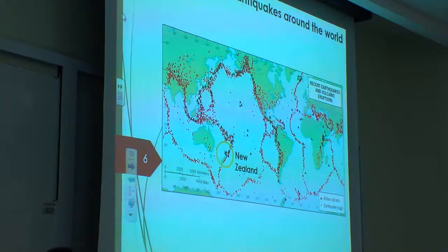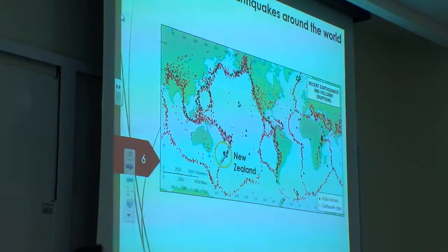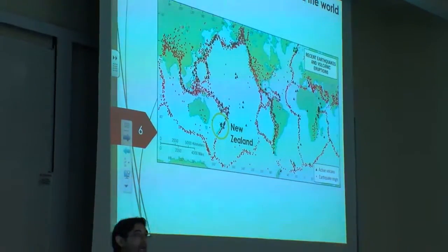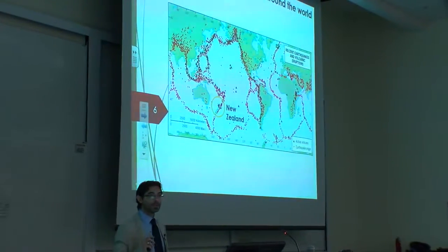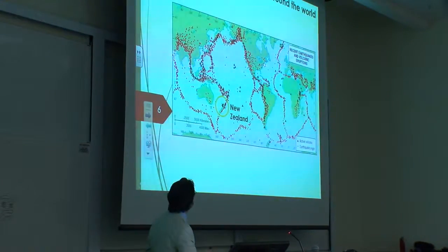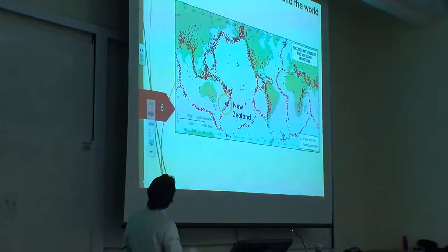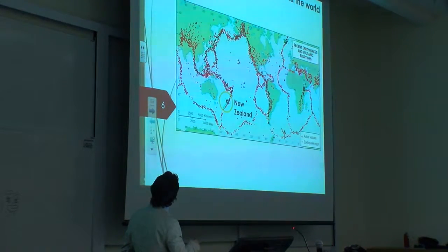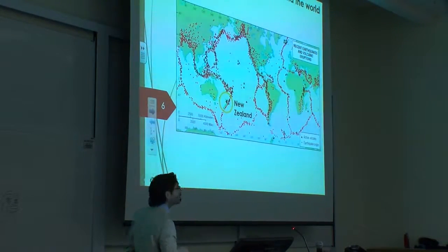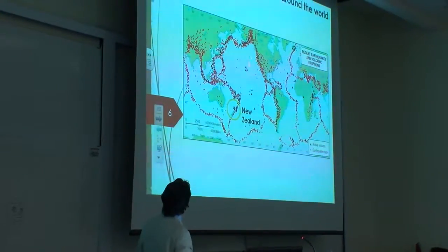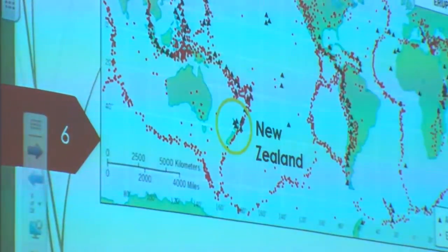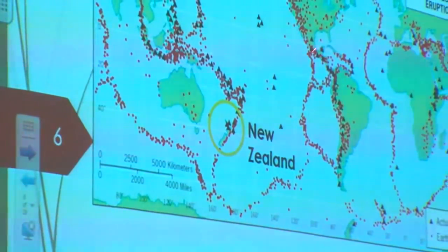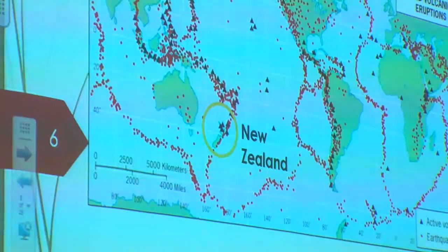Today I want to focus on earthquake engineering and the damage caused by earthquakes. Let's have a look at a typical map showing the location of very big, severe earthquakes around the world. You can clearly see some areas affected by many earthquakes — every red point is an earthquake. You can also see black triangles, which mark the location of volcanoes. Wherever you have earthquakes, you also have volcanoes, so there is a clear link.